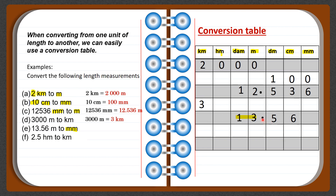Another approach is to displace the decimal point until it reaches the asked unit column. When you move the decimal point, you move it to each place value step by step until you reach the asked unit. If there is an empty place value, fill it in with a zero — you cannot leave a blank. So 13.56 meters equals 13,560 millimeters.